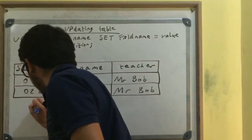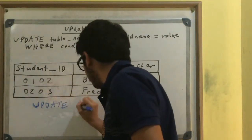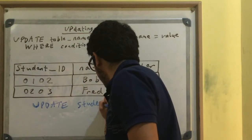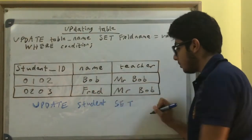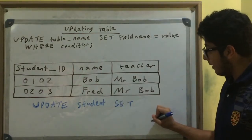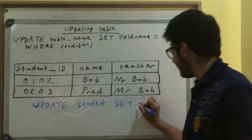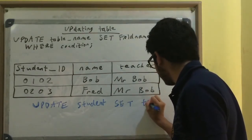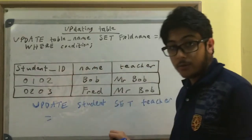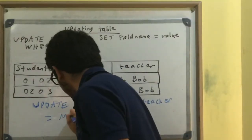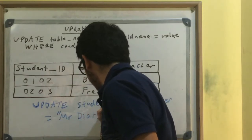So UPDATE - my table name was student, remember. And I'm going to change Fred's teacher to Mr. Diary. SET teacher - that's the field name - to which value I'm going to set it to: Mr. Diary. Remember your quotation marks.